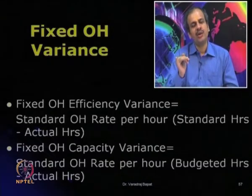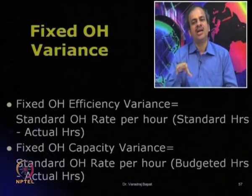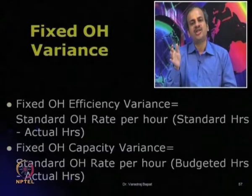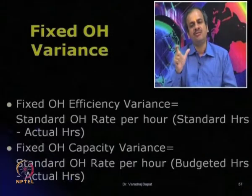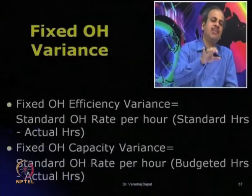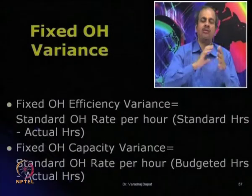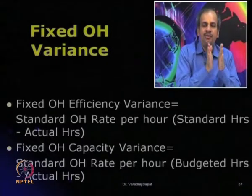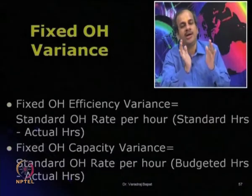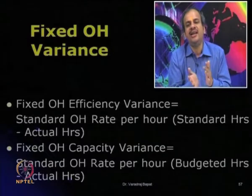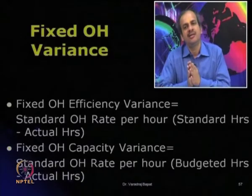Fixed overhead capacity variance: within the bracket we compare budgeted hours with actual hours. If we planned to work for 5 hours but worked only 3, that difference multiplied by standard overhead rate gives capacity variance — it shows the difference in how much the plant was utilized. Overall volume is subdivided into efficiency and capacity.